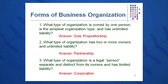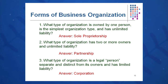What type of organization is owned by one person, is the simplest organization type to form, and has unlimited liability? This is the sole proprietorship. Some of you may have already started a business where you were the sole proprietor. We'll talk about the types of liability affiliated with each, the cost of each, and so on.